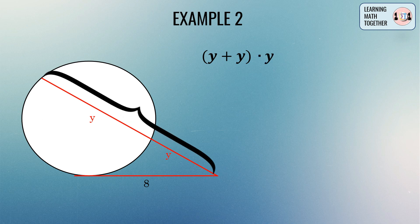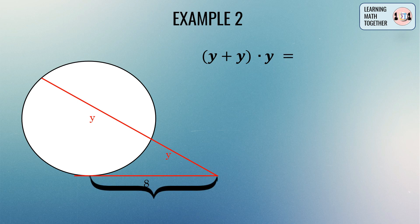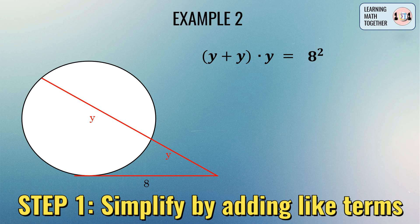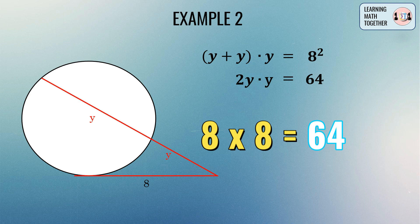The secant segment is the sum of the two unknown values, so we write y plus y, and then multiply that by the external segment y. Equate that to the square of the tangent segment, which is 8 squared. Simplifying y plus y gives 2y, so we have 2y times y equals 64.